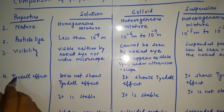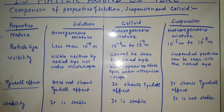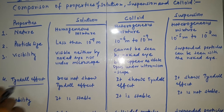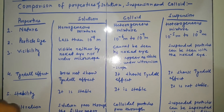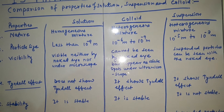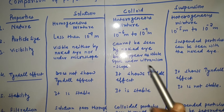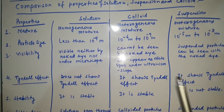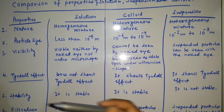The fourth property is the Tyndall effect, also called scattering of light. In this effect, the path of light is visible through the mixture. Solution does not show the Tyndall effect because the particle size of solution is very small. But colloid and suspension both show the Tyndall effect, because their particle sizes are bigger than that of solution.